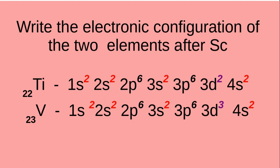Titanium, atomic number 22: its electronic configuration is 1S2, 2S2, 2P6, 3S2, 3P6, 3D2, and 4S2. And vanadium, atomic number 23: electronic configuration 1S2, 2S2, 2P6, 3S2, 3P6, 3D3, and 4S2.